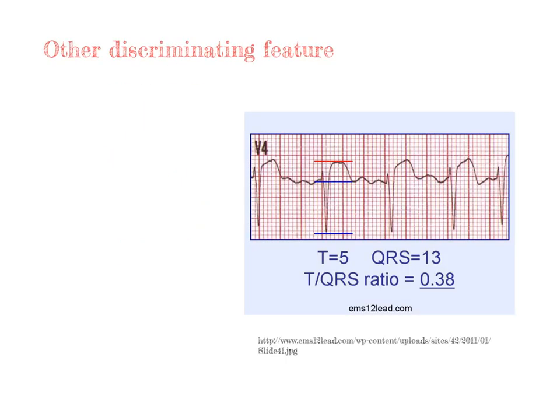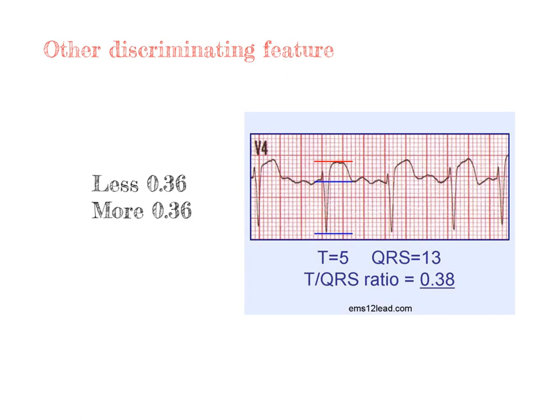The ratio of T wave to QS complex amplitude can be used to differentiate LV aneurysm from acute STEMI. A ratio less than 0.36 favors LV aneurysm in all leads, while a ratio of more than 0.36 in any lead favors anterior STEMI.